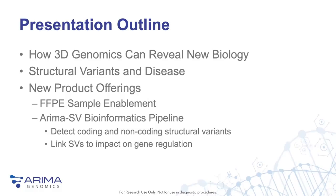Here's just an outline of the presentation. The first half is going to be introductory in nature — a bit of background on 3D genomics and how that can reveal novel biology, some background on structural variants with respect to disease, and also some information on our new product offerings that we're going to be announcing today. That includes FFPE sample type enablement for our Hi-C technology, as well as a bioinformatics pipeline which we're calling the ARIMA SV bioinformatics pipeline. In the second half, we'll go through data and examples.